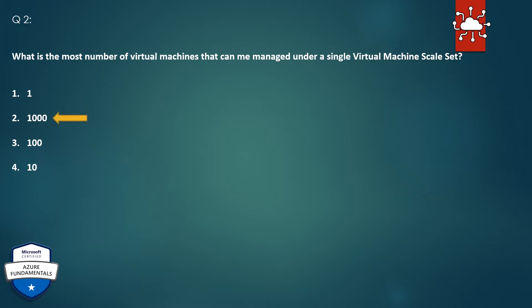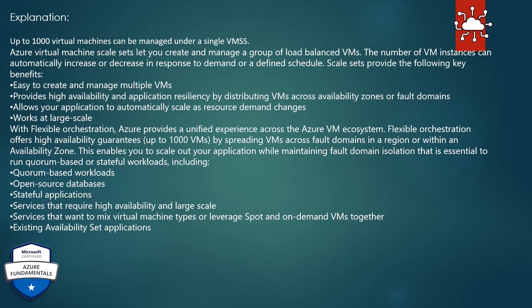The correct answer is 1,000. Explanation: Up to 1,000 virtual machines can be managed under a single VMSS. Azure Virtual Machine Scale Sets let you create and manage a group of load-balanced VMs. The number of VM instances can automatically increase or decrease in response to demand or a defined schedule.